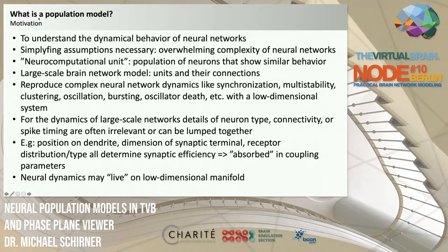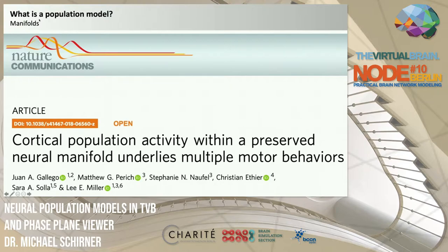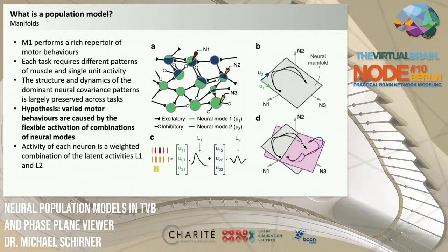Another motivation is that neural dynamics may live on a low-dimensional manifold, a recurring observation in experimental data. For example, the cortical population activity required to perform different kinds of motor behaviors can be mapped to a low-dimensional neural manifold that is largely preserved across different tasks. M1, the primary motor cortex, performs a rich repertoire of motor behaviors, and during each task we measure very different activity patterns in individual neurons.